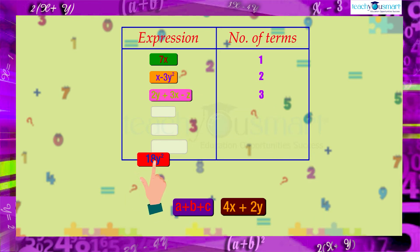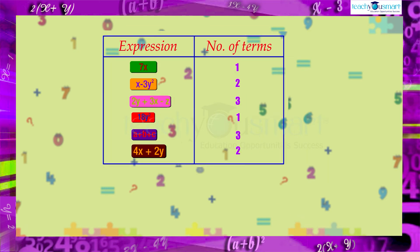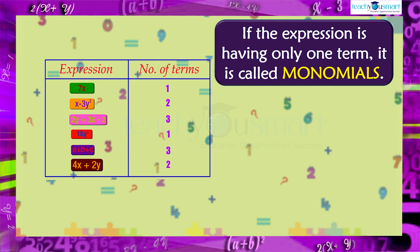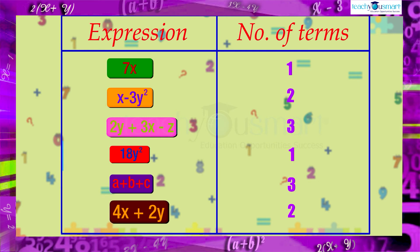In 18y square, there is one term. In a plus b plus c, there are three terms. And in 4x plus 2y, there are two terms. If the expression is having only one term, it is called a monomial. So 7x and 18y square are monomials.